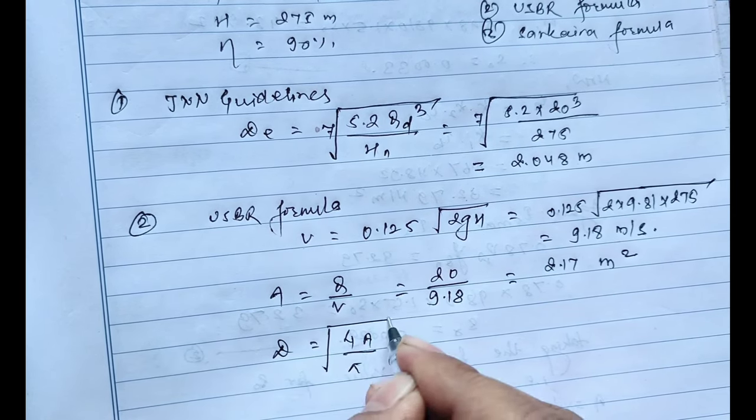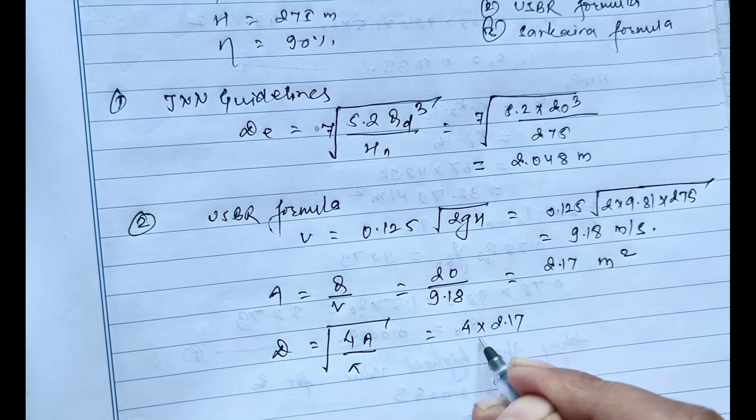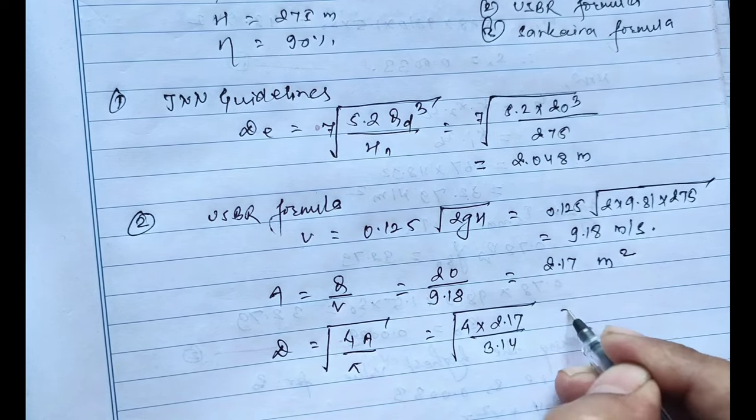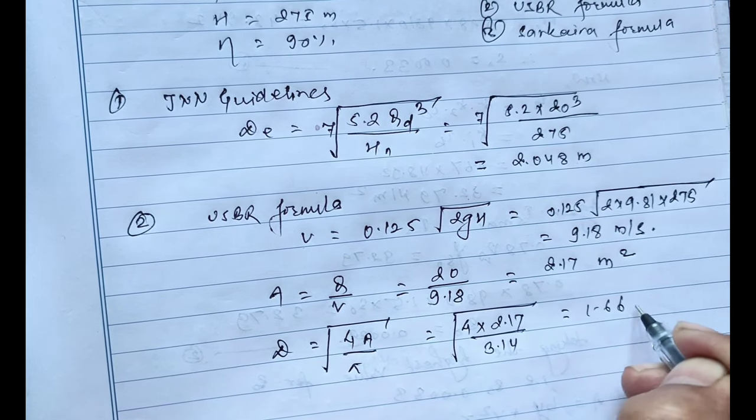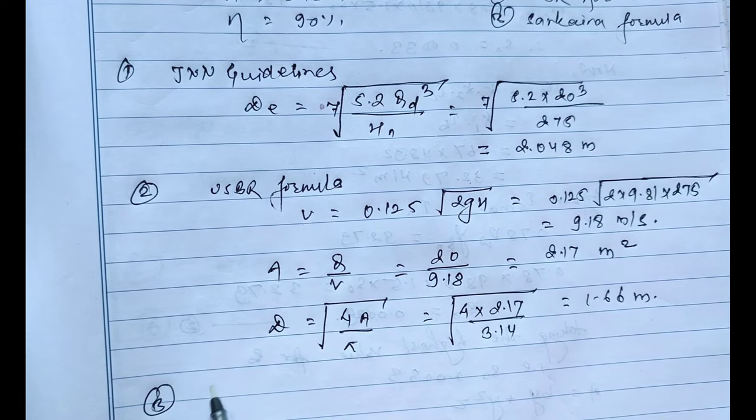And finally the diameter D equals root of 4A by pi equals root of 4 times 2.17 divided by 3.14, equals 1.66 meters. And at the last we will find out the diameter using Sarkaria formula.